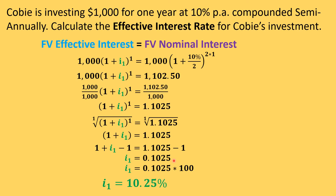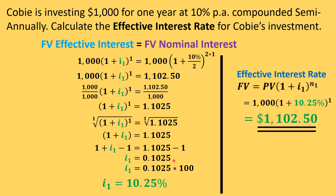We can verify this using the effective interest rate formula: FV = PV × (1 + effective rate)^n₁. So one thousand dollars invested at 10.25% to the power of one gives one thousand one hundred and two dollars and fifty cents. It works out.